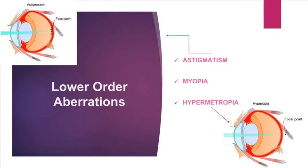Whereas lower-order aberrations include astigmatism, positive defocus (i.e. myopia), and negative defocus (i.e. hypermetropia).